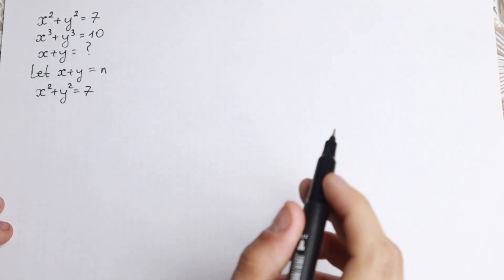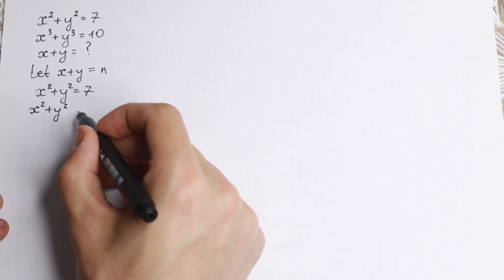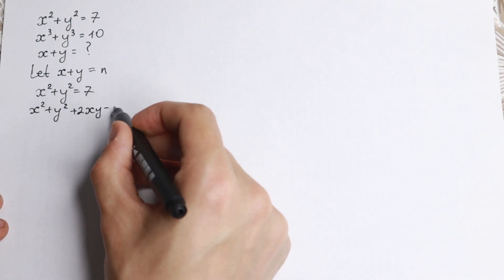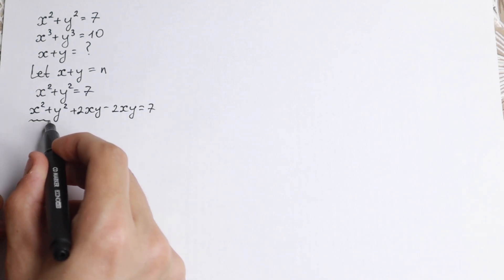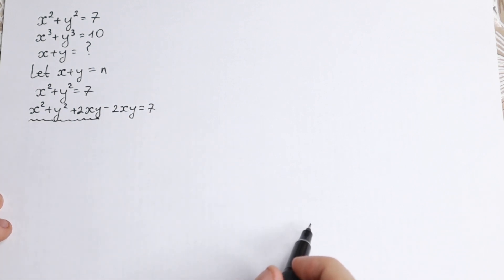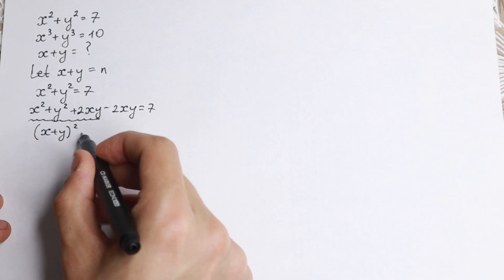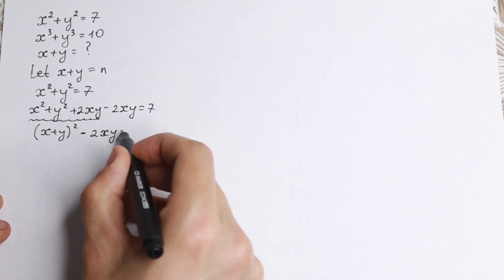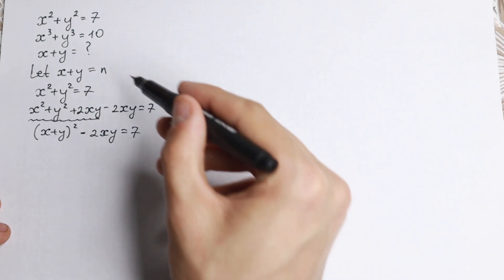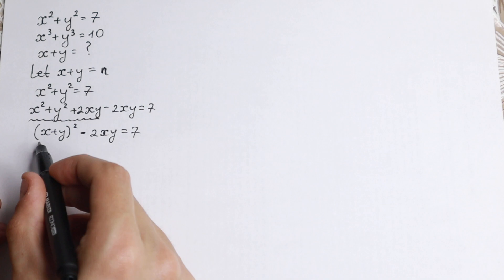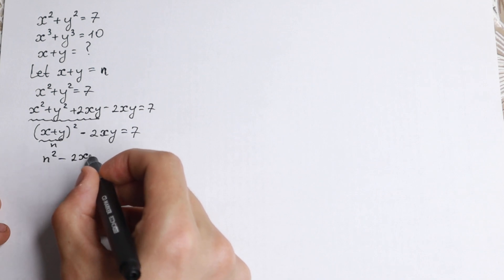Here's a really good trick: I write x squared plus y squared, then add and subtract 2xy, so nothing changes since they cancel. But now x squared plus y squared plus 2xy is the formula for (a+b) squared, giving us (x+y) squared minus 2xy equals 7. Since x plus y equals n, we have n squared minus 2xy equals 7.